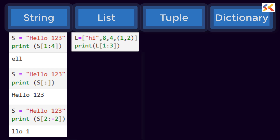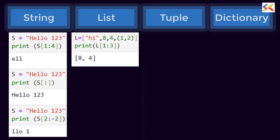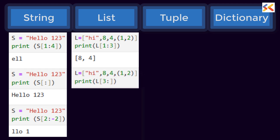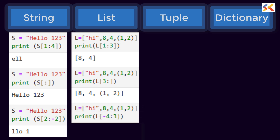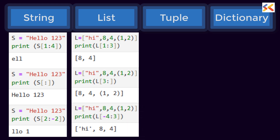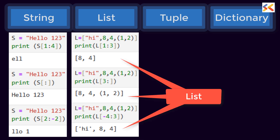Now let's see the same in list. Here we have a list and in square brackets we give start index and end index. It will return a sublist. Here also you will notice the end index is not included. Only the colon is compulsory. If you do not give the end value, it will give you a list starting from index 3 till the end. Here also you can use negative index and it works exactly like string. Note that slicing of a list will always return a list.